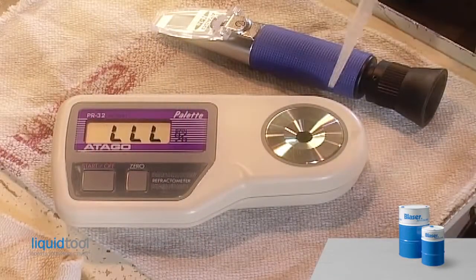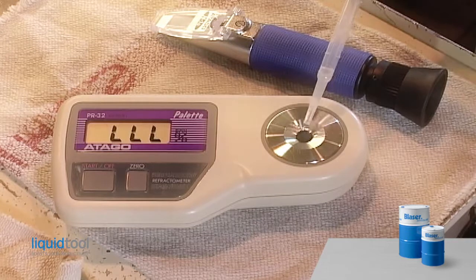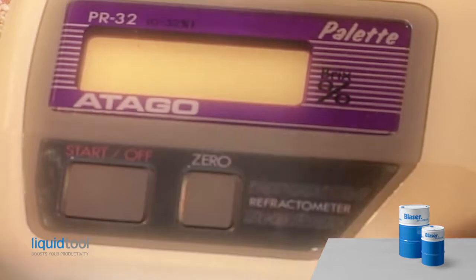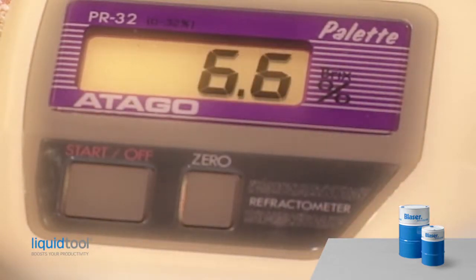This problem is also solved by using a digital refractometer available from Blaser, which gives a more precise concentration reading even in diffused samples that are hard to measure.